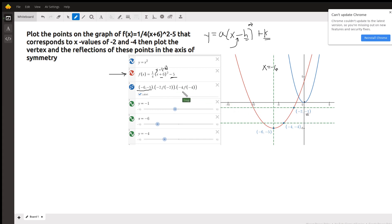And when x is negative four, if you put negative four in for x, you're going to get two squared is four, a fourth of four is one, one minus five is, there it is, negative four.